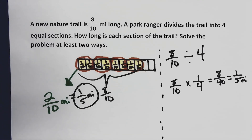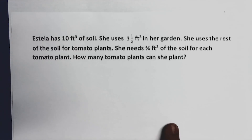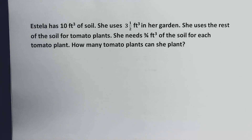We've used visuals, we've used common denominators, and we even practiced multiplying fractions by the reciprocal. So let's look at a couple more problems — you can choose how you want to solve it: visual model, common denominators, or multiplying by the reciprocal. Here's our next word problem. Estella has ten cubic feet of soil. She uses three and a half cubic feet in her garden. She uses the rest of the soil for tomato plants. She needs three-fourths cubic foot of soil for each tomato plant. How many tomato plants can she plant?